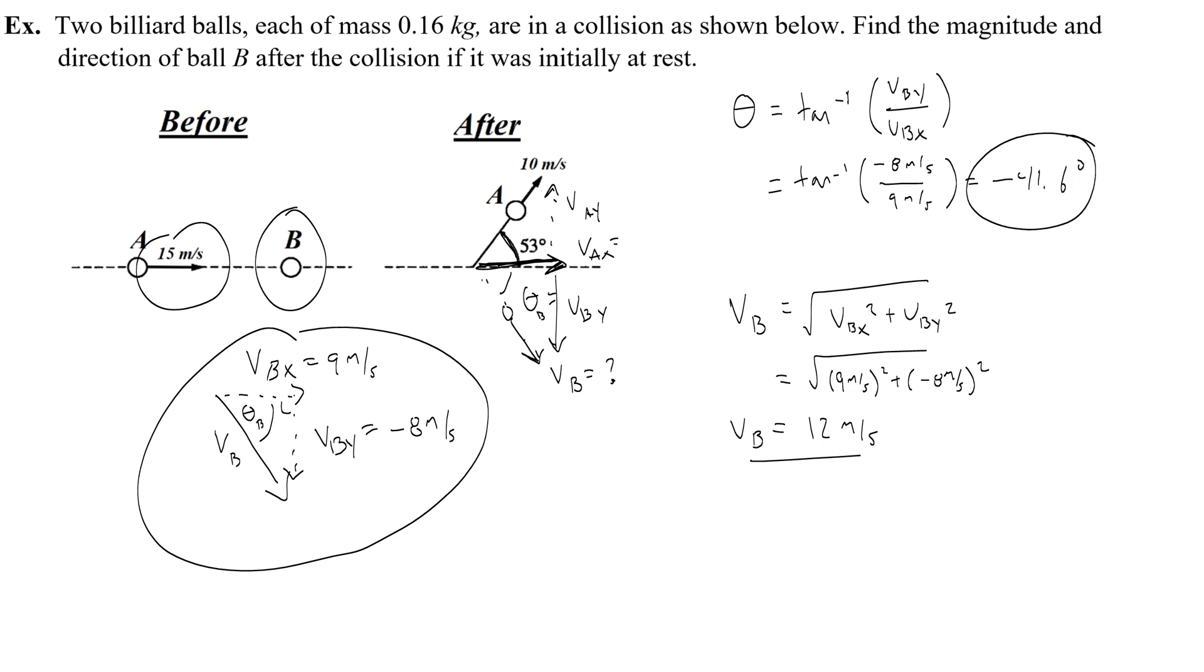Okay, and I'm going to check and see if that makes sense here with this angle, and it does. It's a negative angle, which means it is below the unit circle, and it's not in the third quadrant. It's in the fourth quadrant, which means that the negative is correct. That's a correct angle, a unit circle angle for this answer. All right, so the magnitude is 12, and the direction is negative 41.6 degrees. Congratulations. You just did a conservation of momentum problem in two dimensions. You're done.